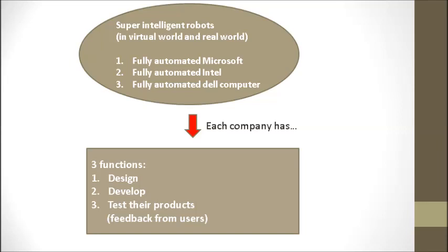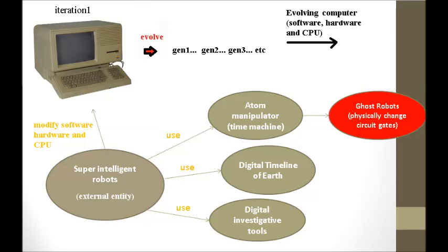The super-intelligent robots are responsible for emulating three companies: Intel, Microsoft, and Dell Computer. Intel is in charge of designing and developing the CPU, Microsoft handles the computer's software — primarily the operating system — and Dell Computer designs and develops the computer's hardware. These three companies work together in both the real and virtual world to design and develop the best computer. The super-intelligent robots use the atom manipulator and the digital timeline of Earth to physically change the atoms of the computer's hardware and software.